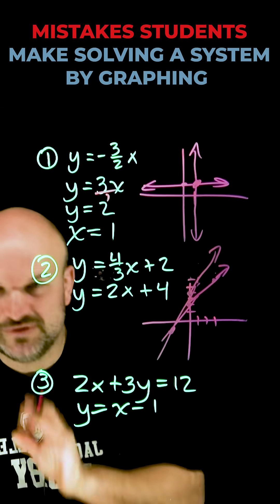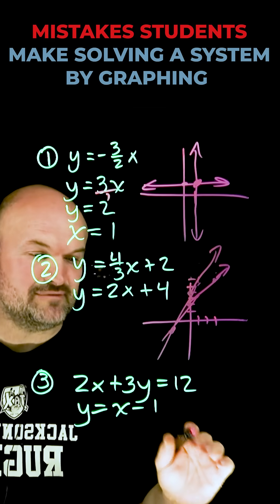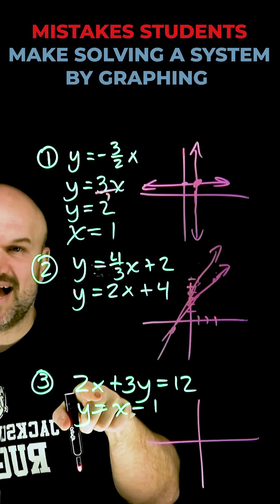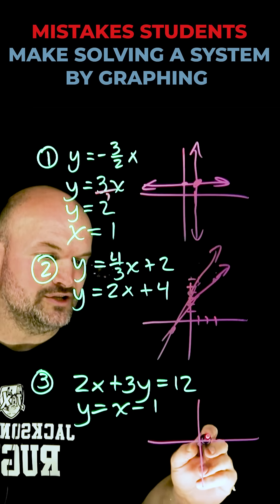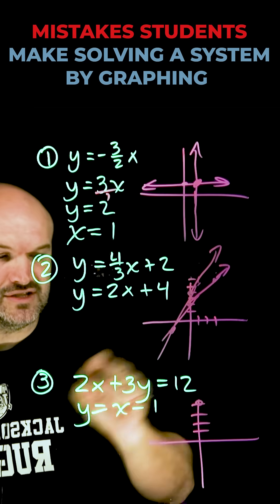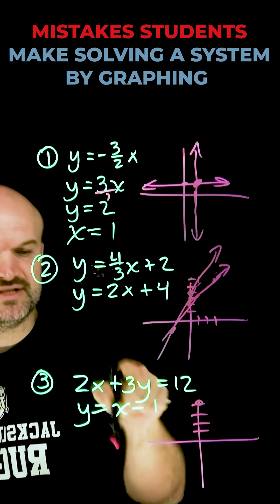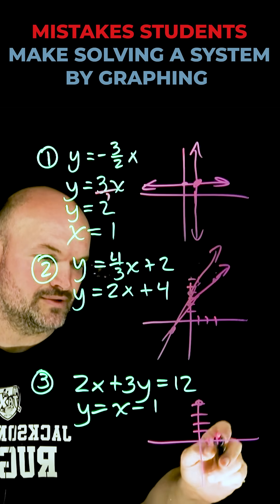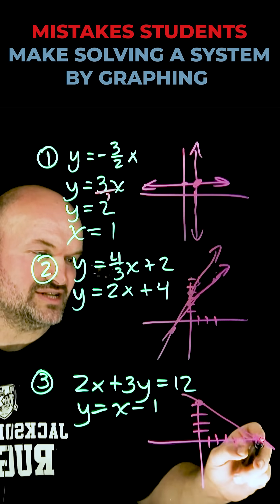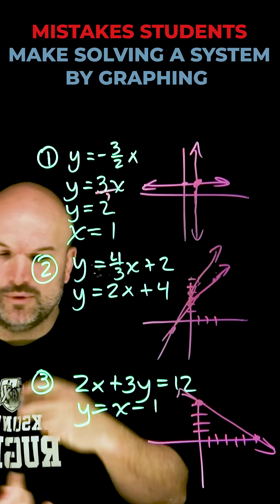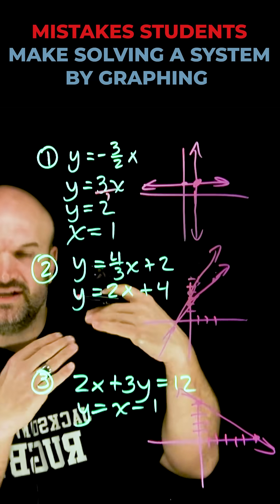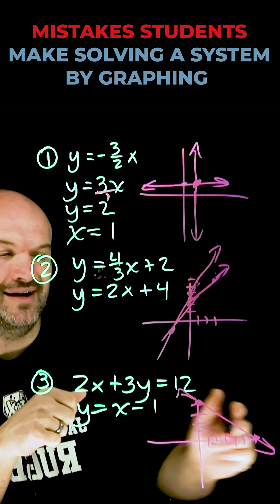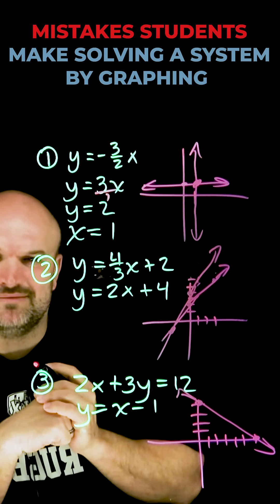The last mistake students make is using intercept form. I love intercept form when I need to graph a linear equation — simply set x equal to 0, solve for y, and you're going to get 4. Then to solve the x-intercept, set y equal to 0 and solve for x, and you'll get x equals 6. Then you simply connect your intercepts. It's great. But when you're trying to find the intersection of two graphs, if you make any mistakes going through there, your intersection point might be a little off.